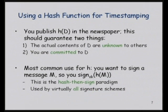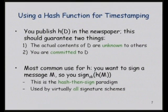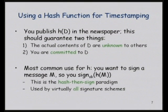Establishing time on something without revealing the content. You may have seen hash functions used for digital signatures. Because digital signatures are a public key operation, they're slow, and so you can't give them gigantic inputs because they'd be really slow. So we always hash down the input and then sign the digest — it's called the hash-then-sign paradigm, and if you've taken a crypto class you've seen this to death already.